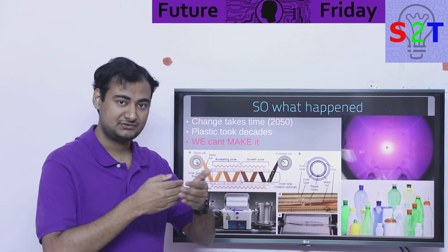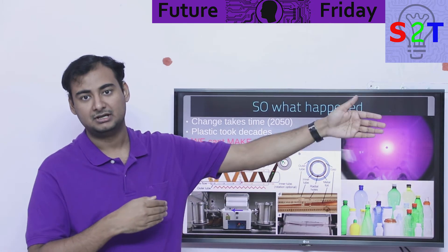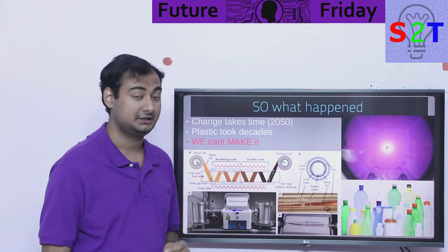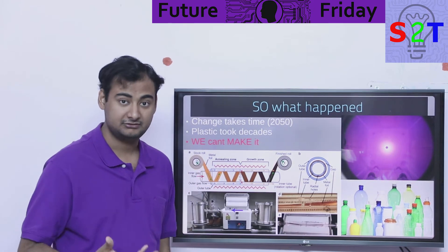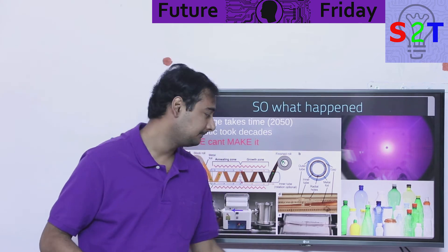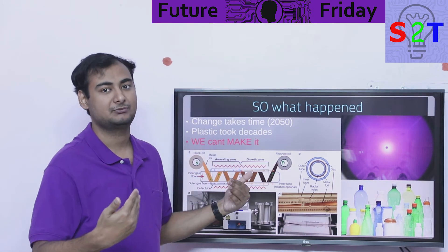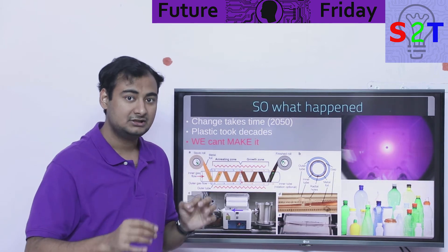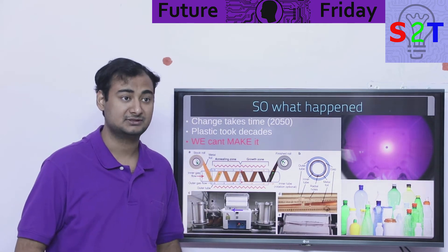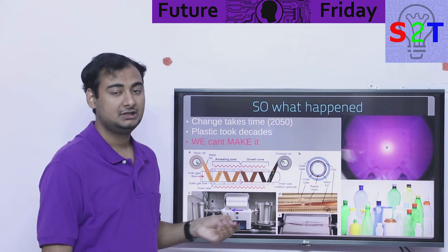When we grow graphene, it grows to a certain size — perhaps 10,000 to 50,000 atoms across — and then a defect appears, then another branch, and because of those defects it's no longer as strong. The more defects, the more it becomes like paper. As of this video, MIT has figured out a way to make a continuous roll of graphene using copper as a base material, hoping to eventually produce it as a proper sheet.